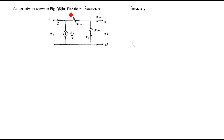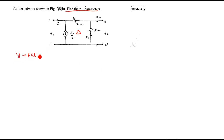We need to find the Z parameters, but the circuit is in delta form. What I will do first is calculate the Y parameters, and later I will use the relations to calculate the Z parameters.